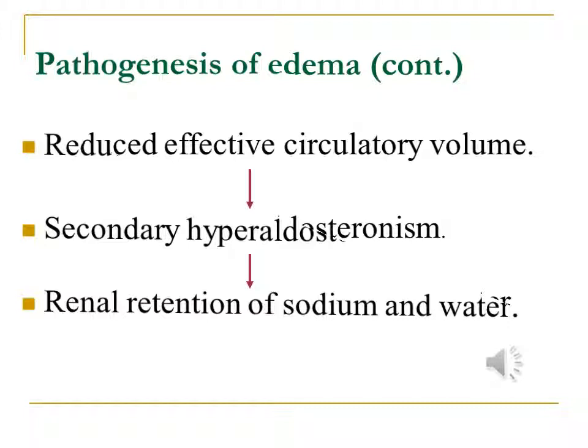After all, the whole volume of plasma is not more than 3 liters, so another mechanism must be involved. That mechanism is this: a reduction in blood volume — mainly the arterial blood volume — will result in stimulation of the suprarenal to produce more aldosterone, that is a state of secondary hyperaldosteronism.